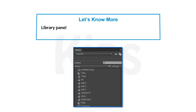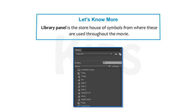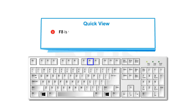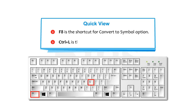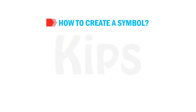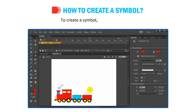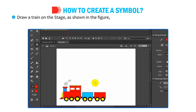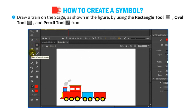The Library Panel is the storehouse of symbols from where these are used throughout the movie. F8 is the shortcut for the Convert to Symbol option. Ctrl+L is the shortcut to open the Library Panel. To create a symbol, draw a train on the stage using the Rectangle tool, Oval tool and Pencil tool from the Tools panel.